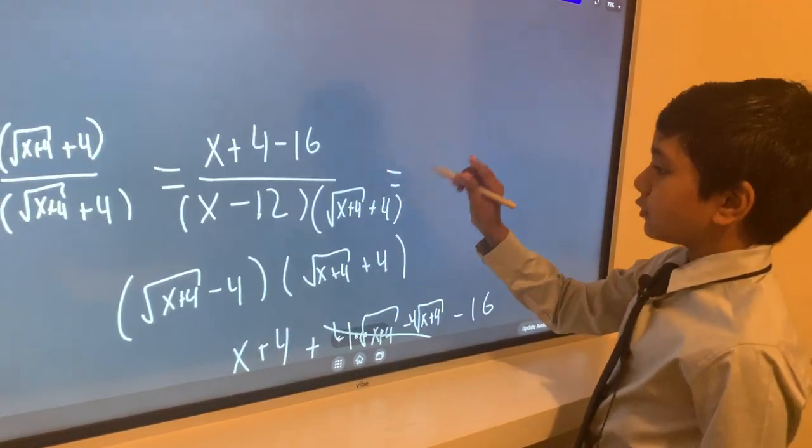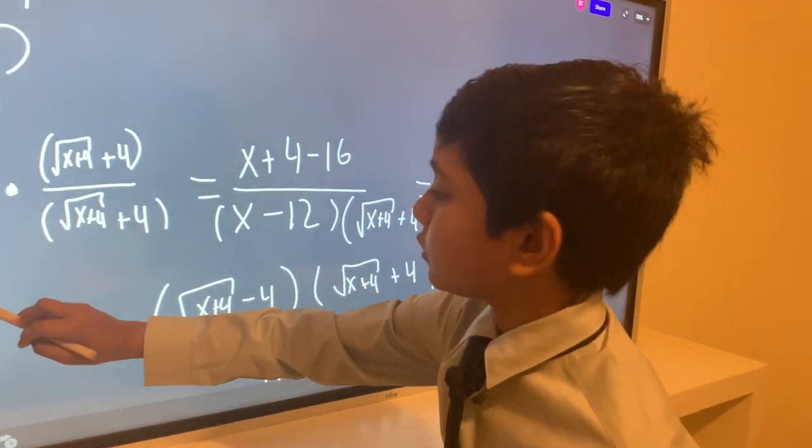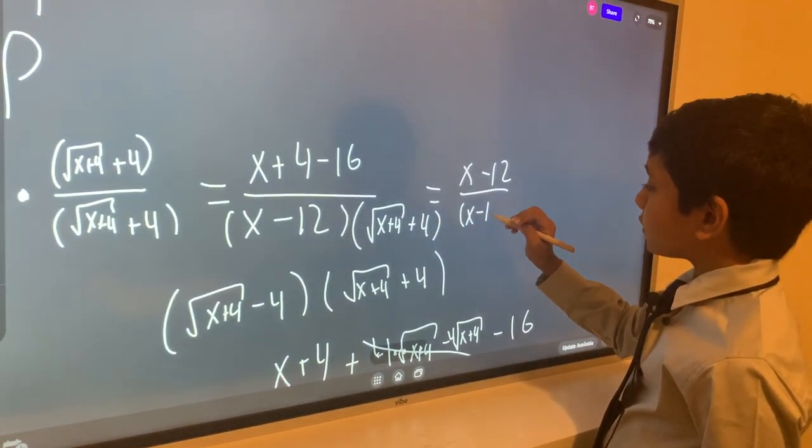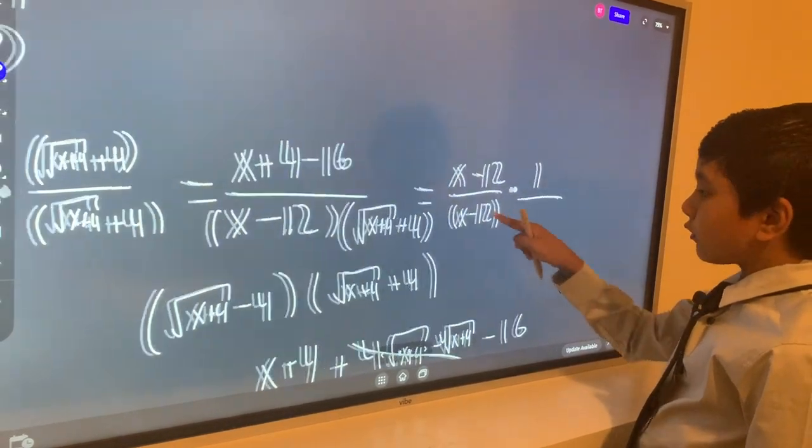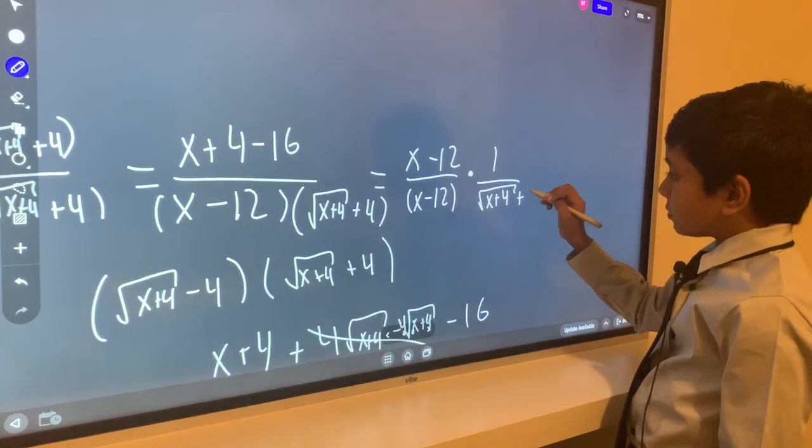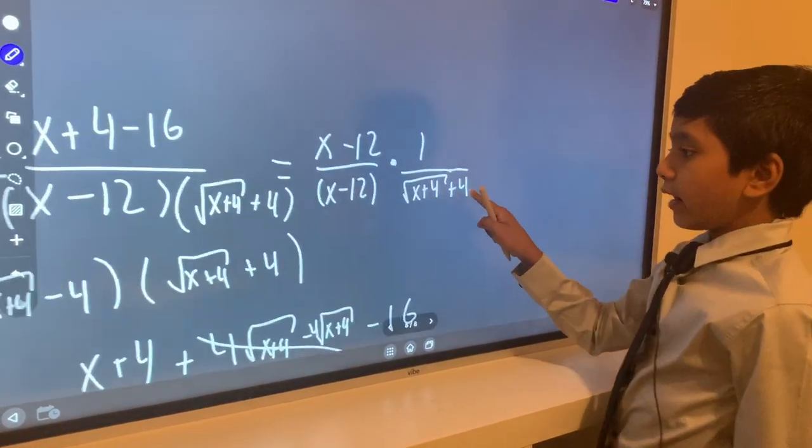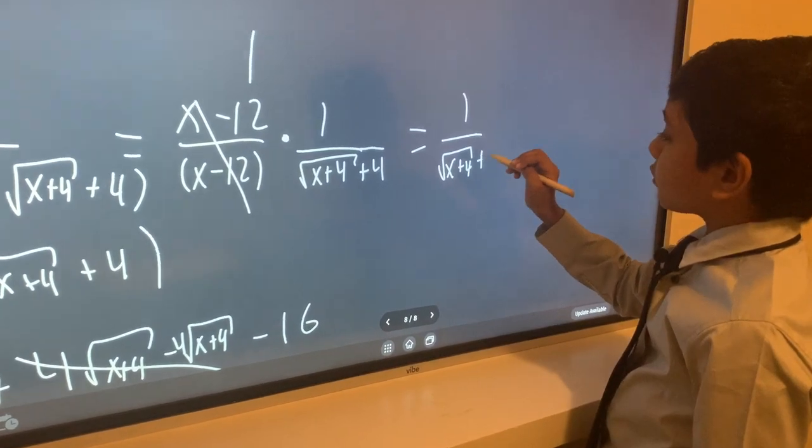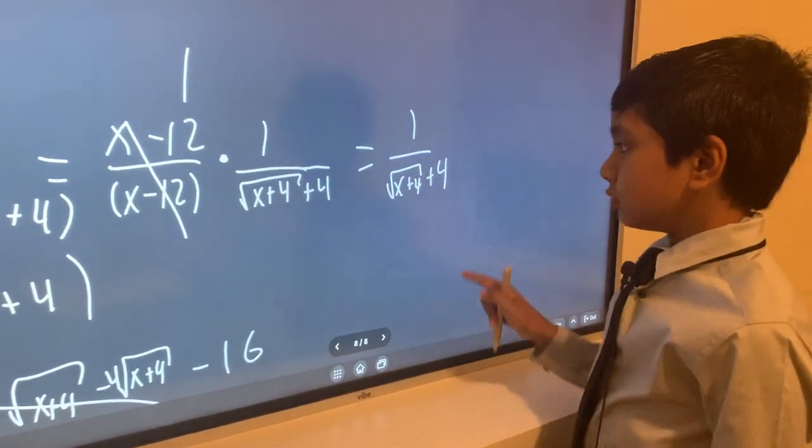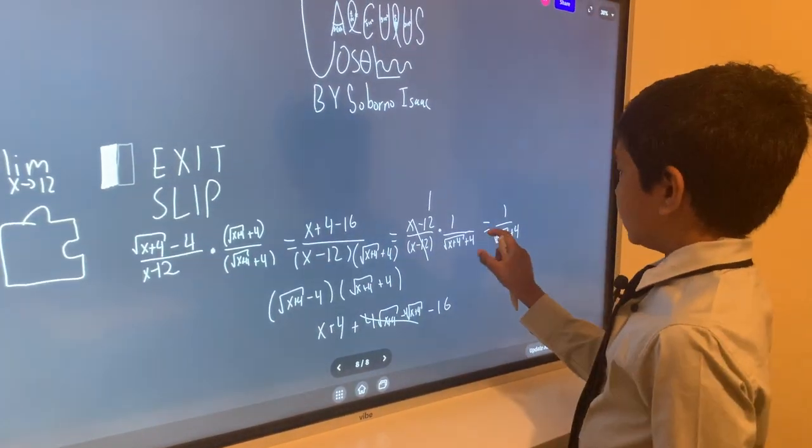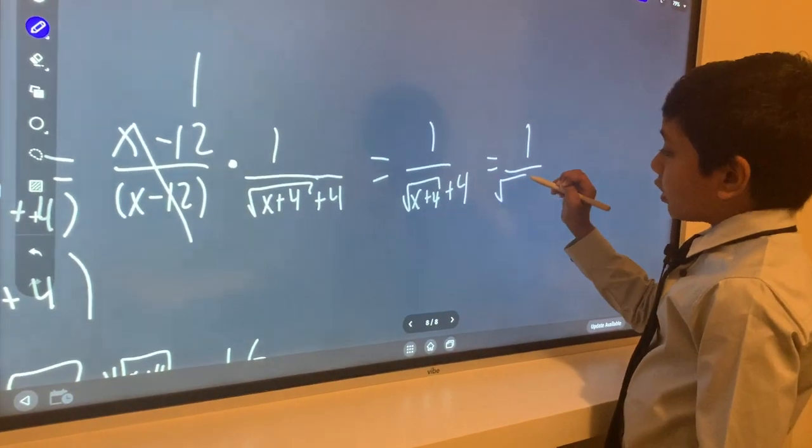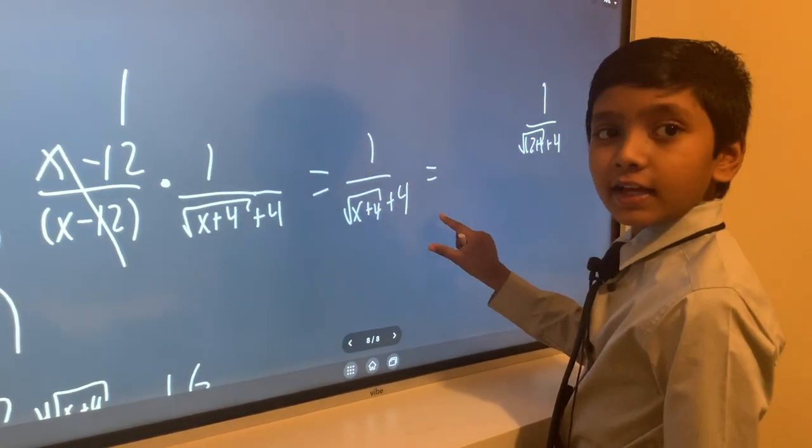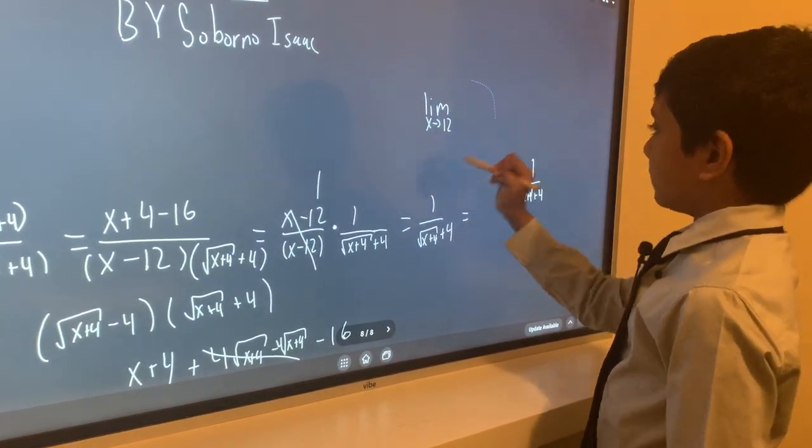Now this just gives you x minus 12 over x minus 12 times the fraction 1 over root x plus 4 plus 4. So now these obviously cancel out and make 1, just leaving us with this fraction: 1 over x plus 4 plus 4. So now we can fit it in like a puzzle piece. If we plug in 12 now, we get 1 over root 12 plus 4. We will put the limit now, as just suggested by Alex Rodriguez. Take this and put the limit over here.